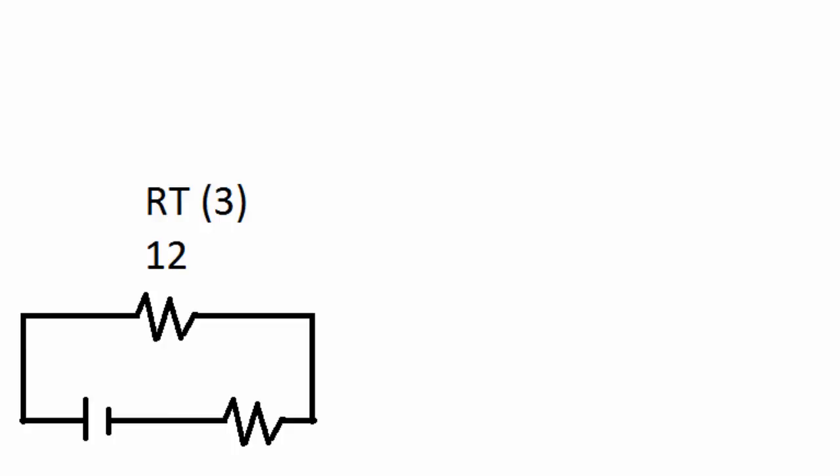So now we're just left with RT3 which is 12 and one 20 ohm resistor and they're in series. So we simply just add them together. So 12 plus 20 equals 32 ohms and this is for RT total for the total circuit.